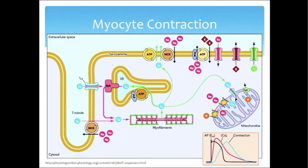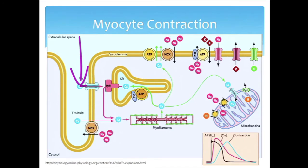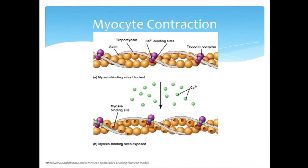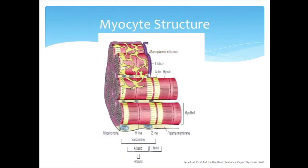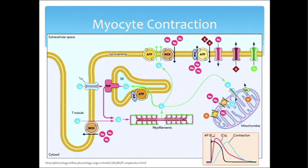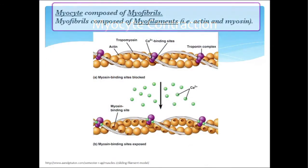That is the process by which the message goes from coming along the surface of the cell membrane to actually getting into the sub-cellular elements that allow muscle contraction to happen. Now we're zooming in even further — we started out at the full myocyte, zoomed in to the cell membrane level along the T-tubule, and now we zoom in further to really look at the actin filament.